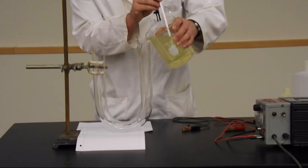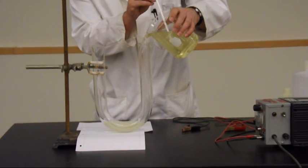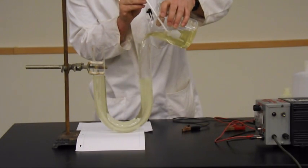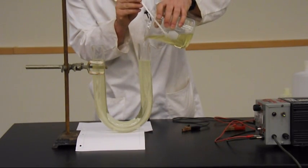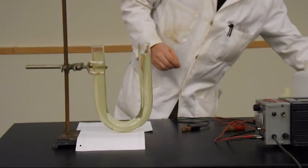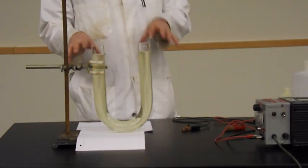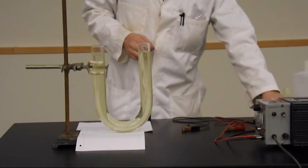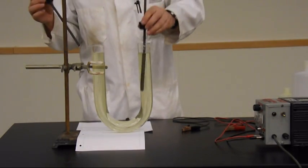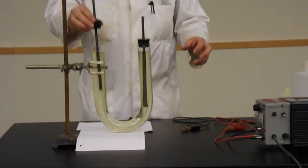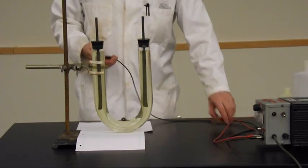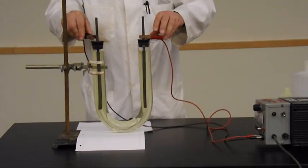I'm going to fill up my U-tube. It's slightly yellow because of a little bit of oxidation of the iodide. These are two graphite rods that I'm using as electrodes. They are both inert electrodes. They don't take part in the chemistry. They're just there to pass current.